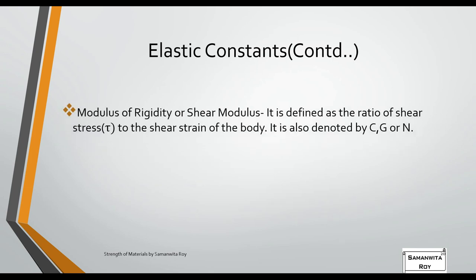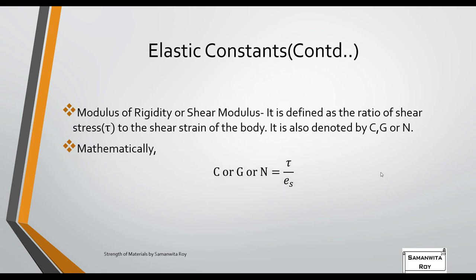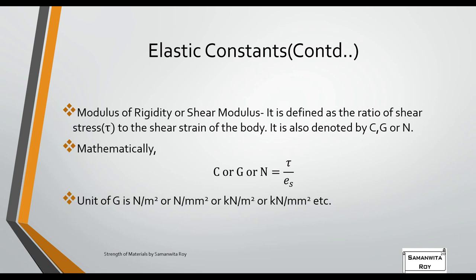The second elastic constant is the Modulus of Rigidity or Shear Modulus, defined as the ratio of shear stress to shear strain. It is denoted by G (also written as C or N). Mathematically: G = τ / e_s, where τ is shear stress and e_s is shear strain. The unit of G is the same as E: newton per meter square, newton per mm square, or kilonewton per mm square.